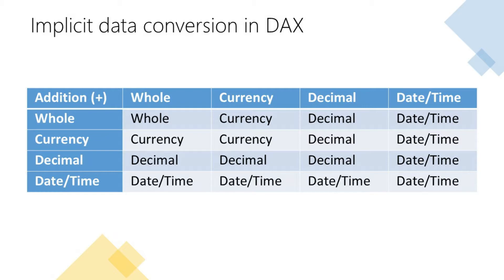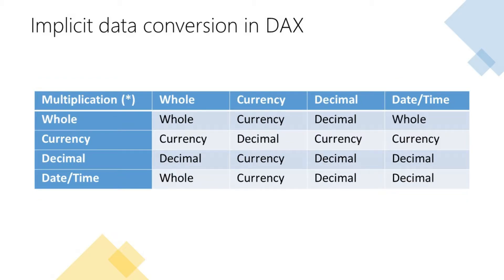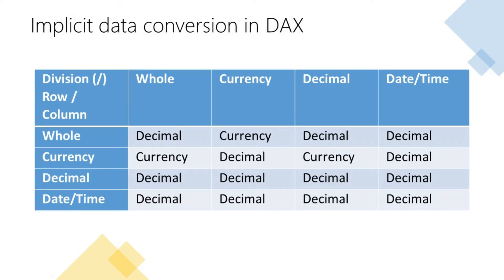The first table shows the implicit conversions that take place when using the addition operator. The next table shows the implicit conversions that take place when using the subtraction operator, showing the resulting data type where a value with the data type in the column is subtracted from the value with the data type in the row. Next we have the implicit conversions for the multiplication operator, and finally the implicit conversions for the division operator, where it shows the resulting data type when a value with the data type in the row is divided by a value with the data type in the column.